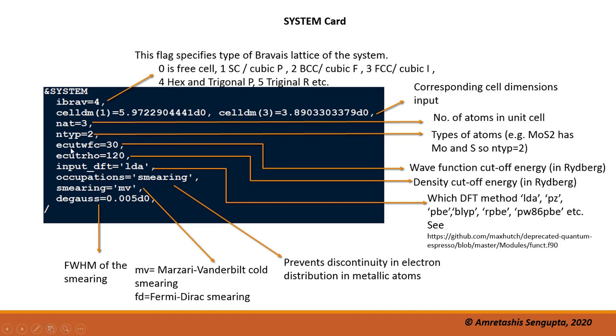Ecutwfc is the wave function cutoff energy in Rydberg. Ecutrho is the density cutoff energy, also in Rydberg. The rule of thumb is to have ecutrho four times that of ecutwfc.